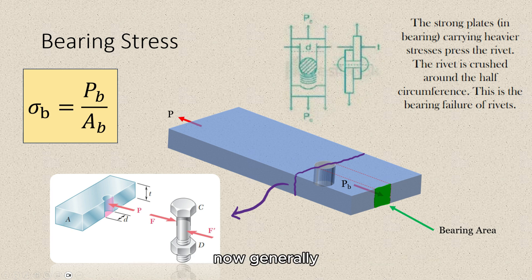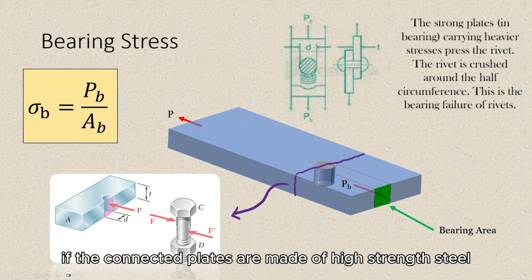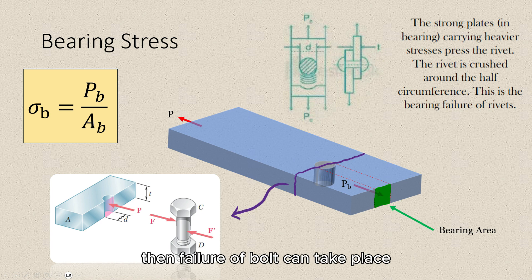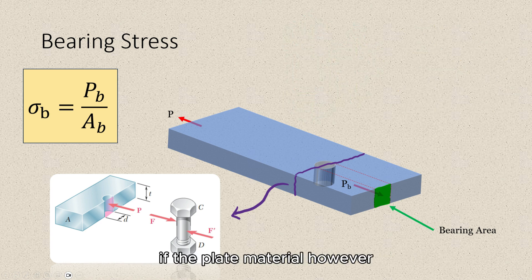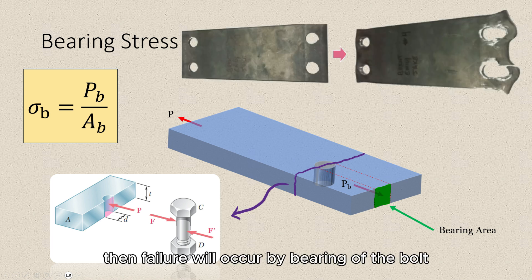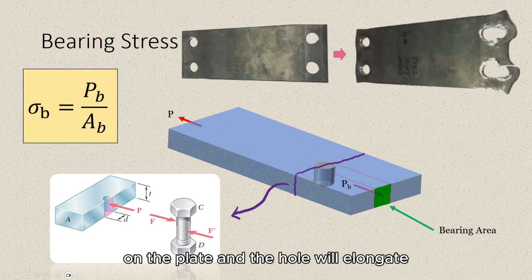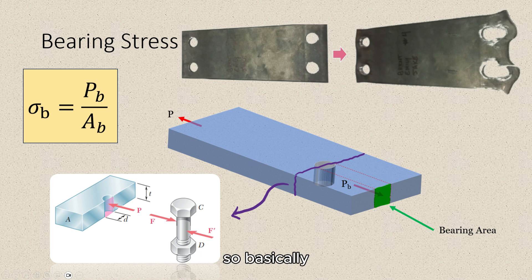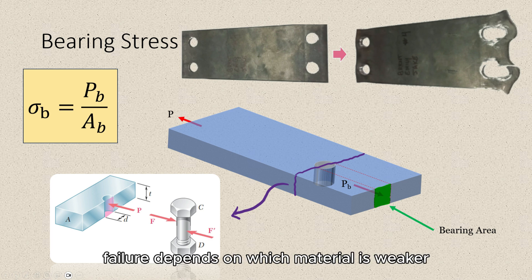Generally, if the connected plates are made of high strength steel, then failure of the bolt can take place by bearing of the plates on the bolts. However, if the plate material is weaker than the bolt material, then failure will occur by bearing of the bolt on the plate and the hole will elongate. So basically, failure depends on which material is weaker.